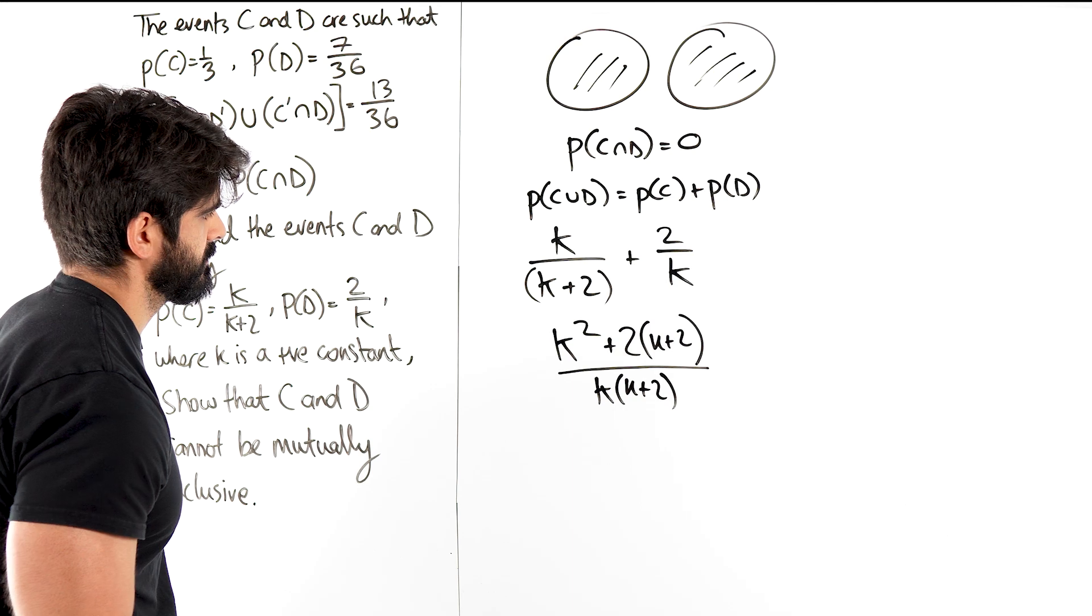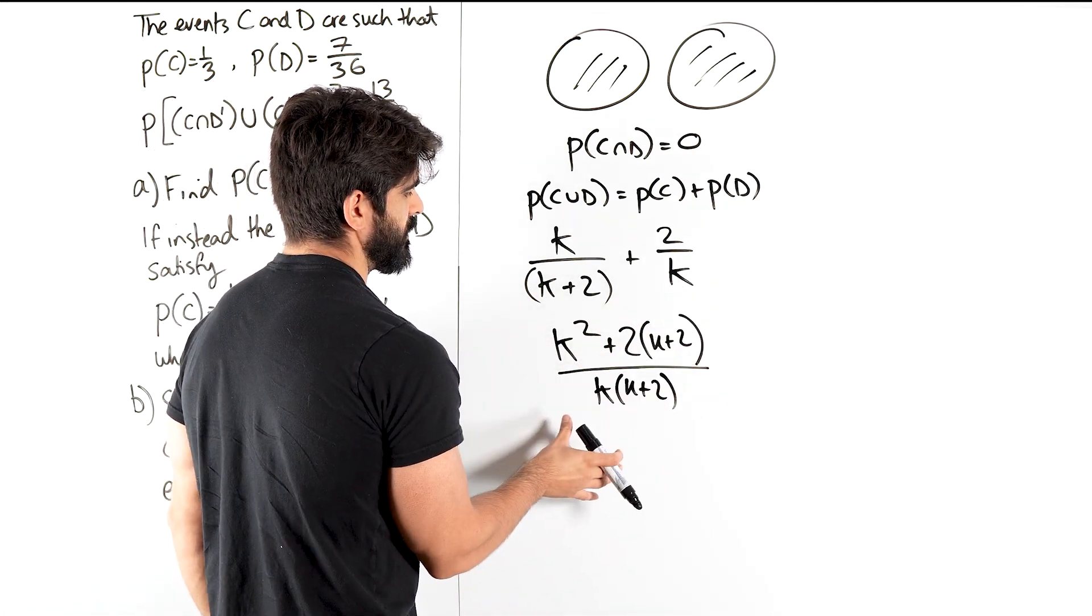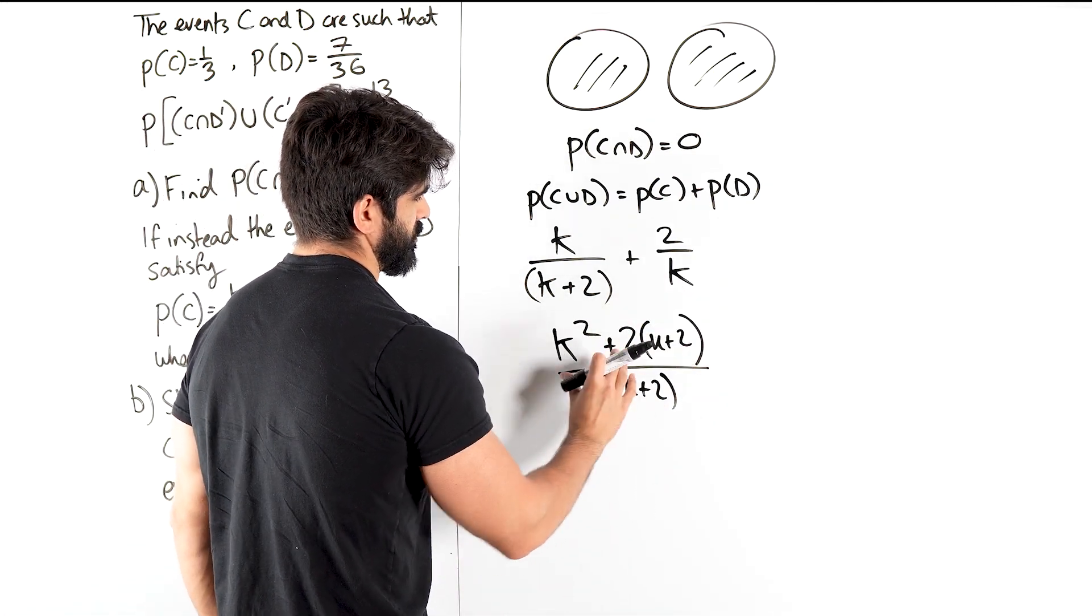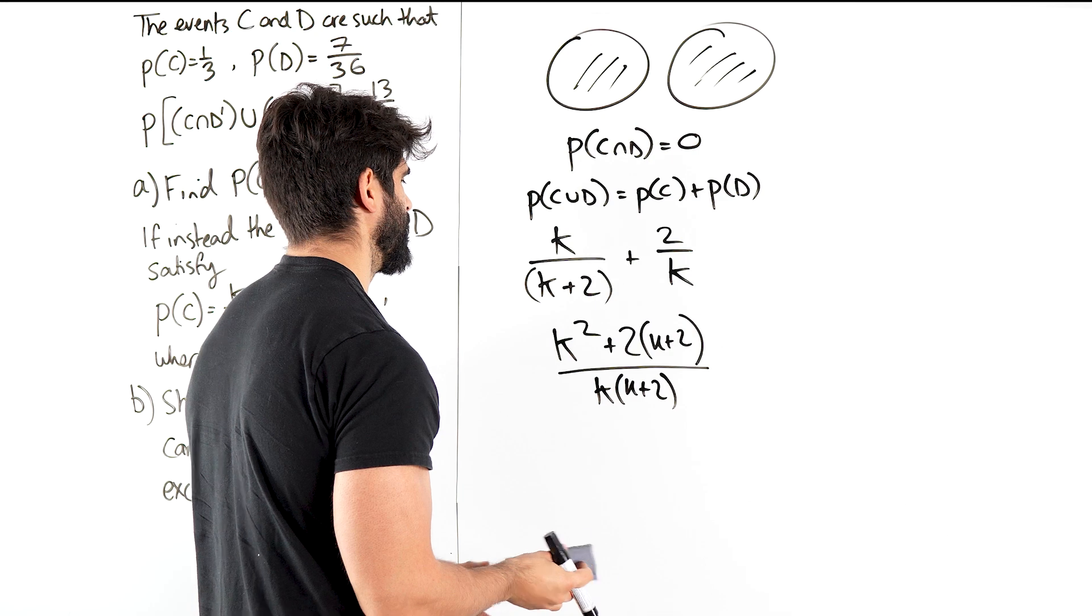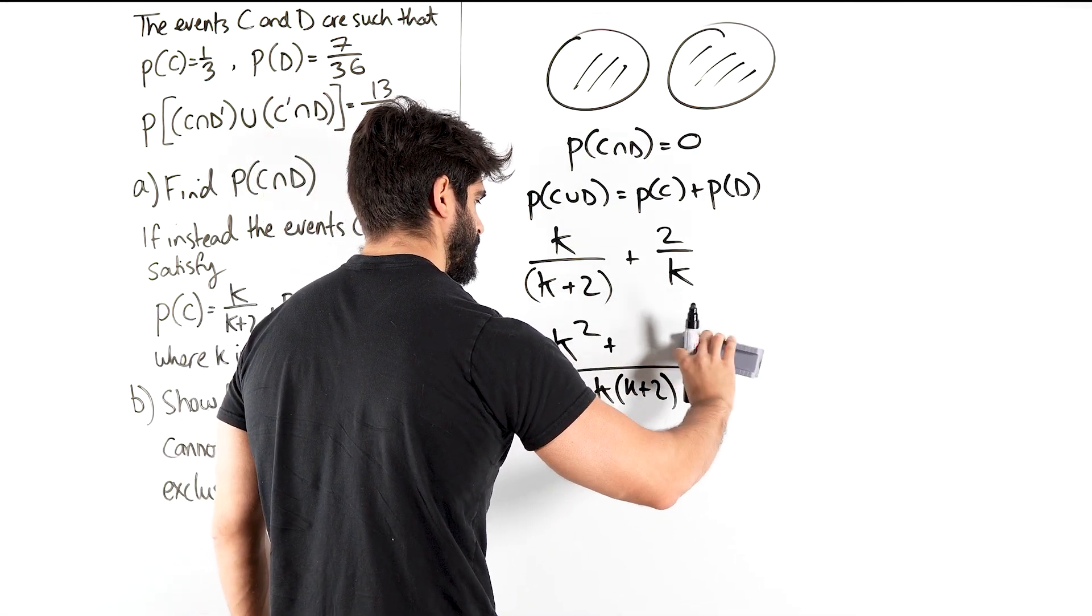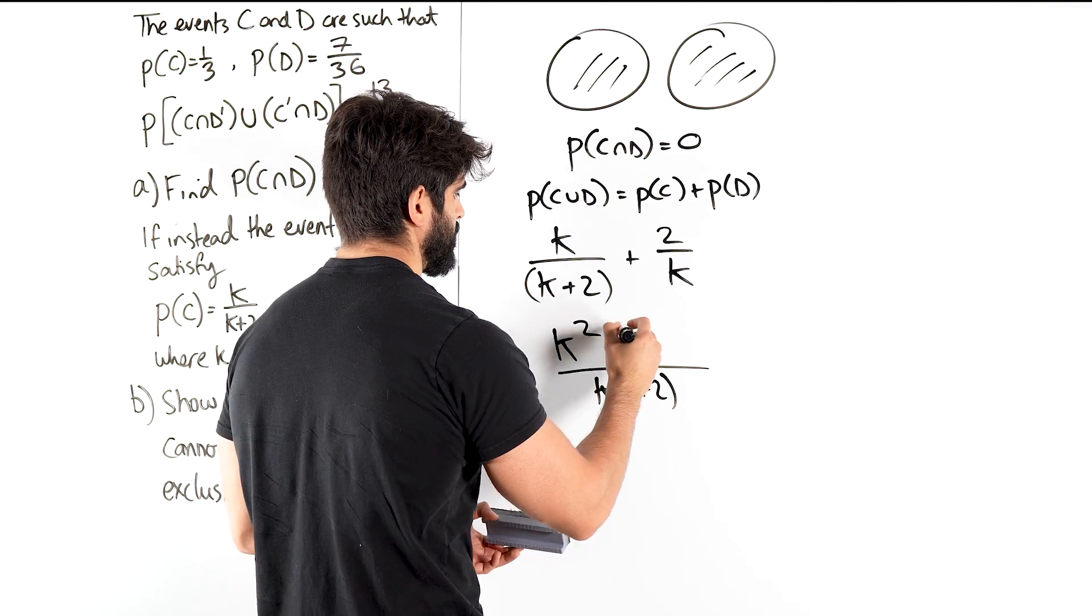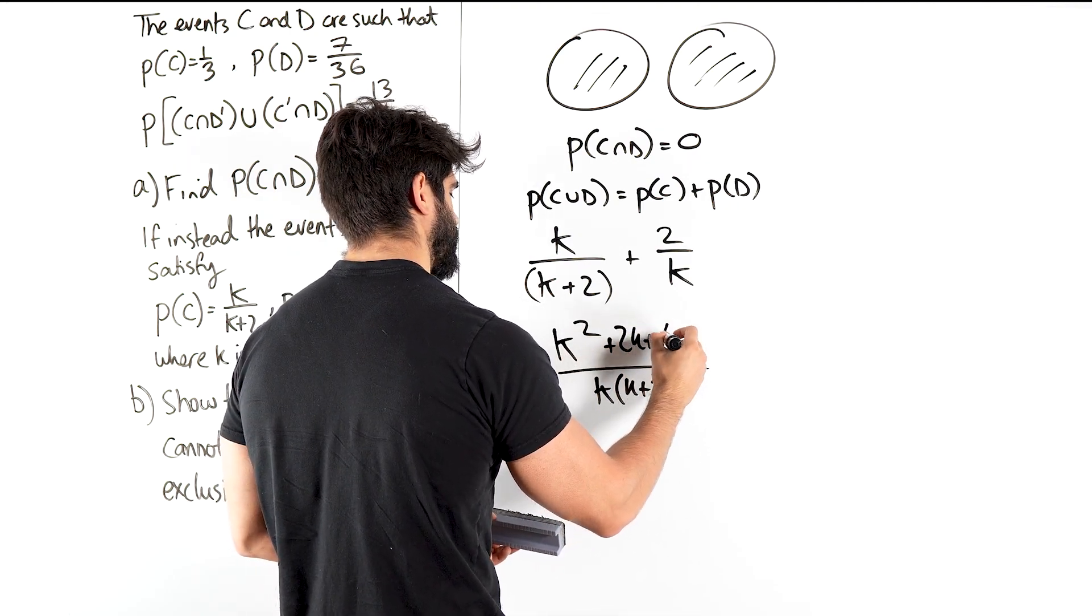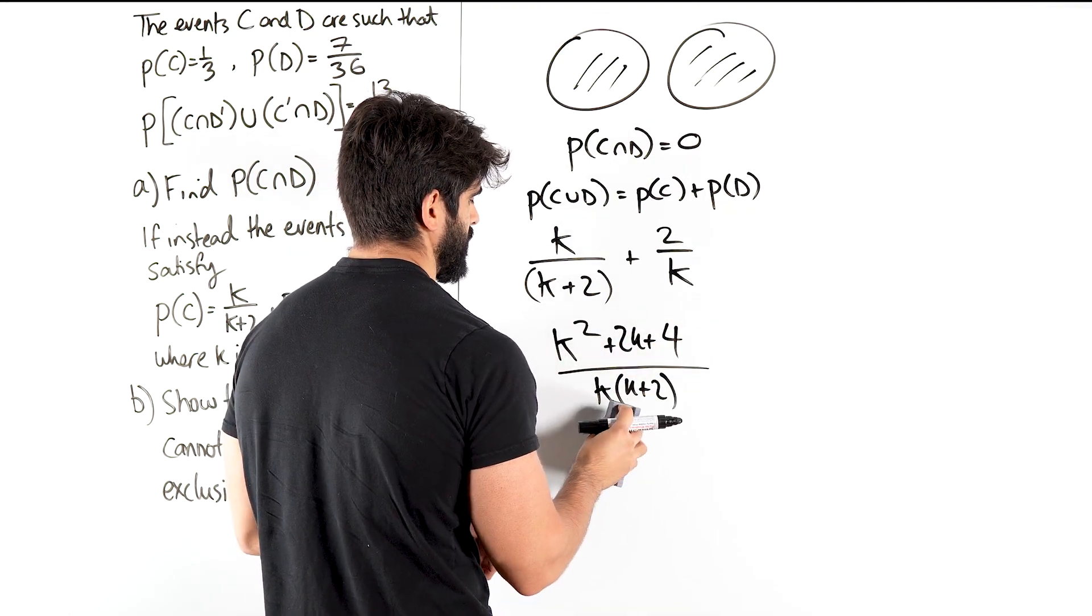Can we split the fraction there? If we split that fraction, we'll get 2 over K plus 1 over... Nah, it doesn't even help me. Maybe we'll do long division. 2K plus 4. So let's keep that expanded. And make that K squared plus 2K.